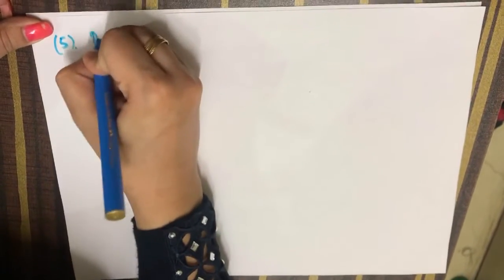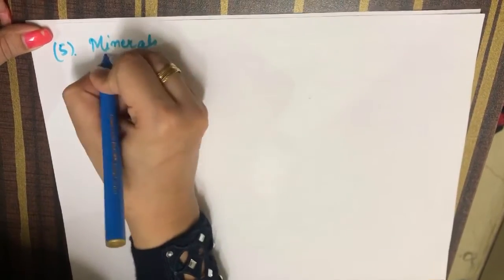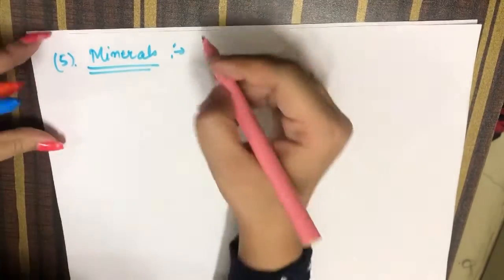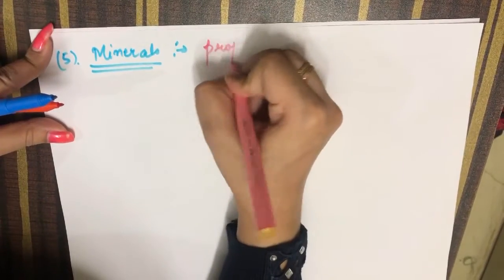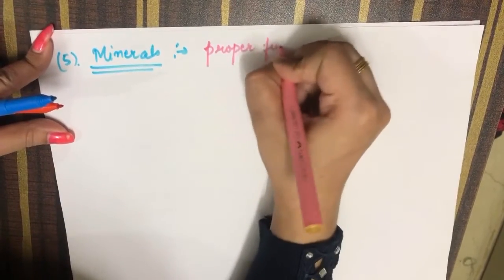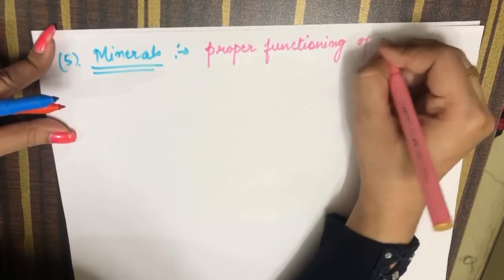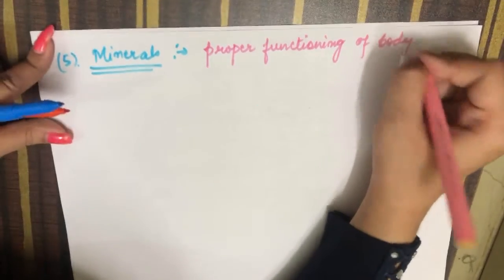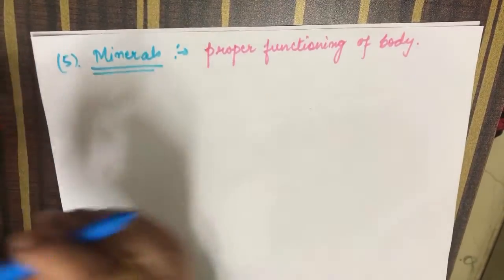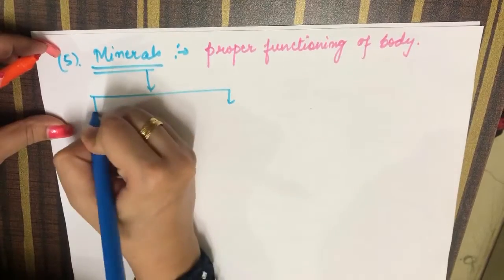Hello everyone, I am back with a new video on components of food. The last component is minerals. Minerals are also required for proper functioning of the body, that is for building muscles and all. Minerals are also of two types.